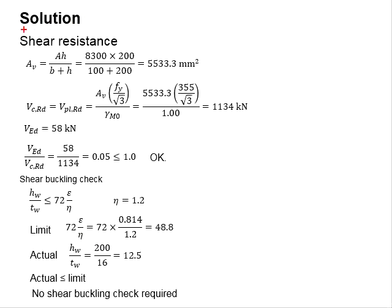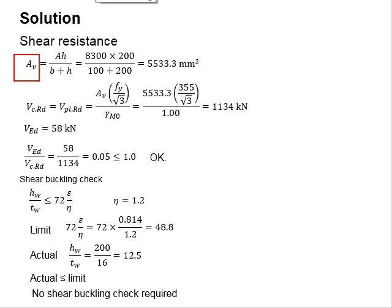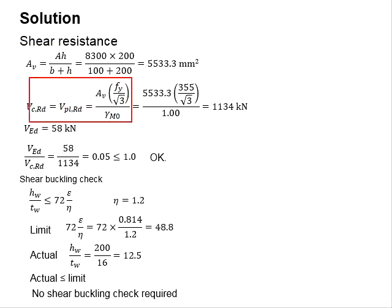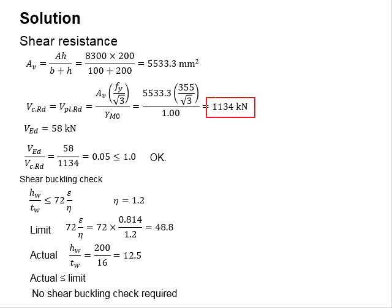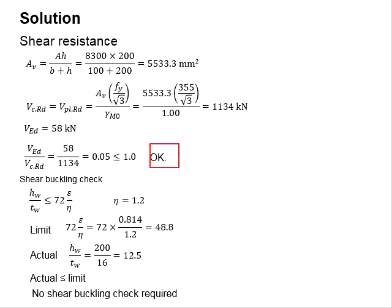Next, check the shear resistance of the member. First, acquire the effective shear area using the equation given in Eurocode. Substituting the section area into this equation, you obtain a shear capacity of 1134 kN. Comparing the resistance against the load, the shear resistance is found to be acceptable.